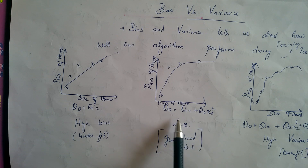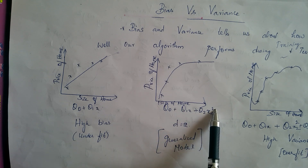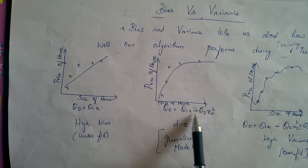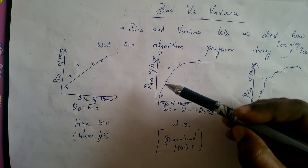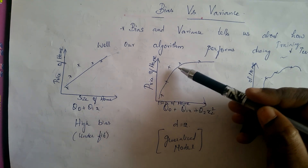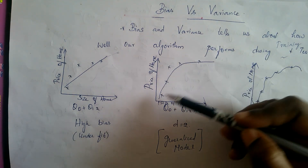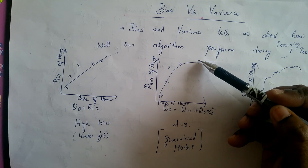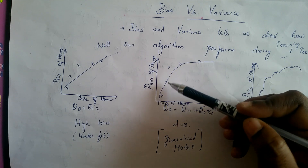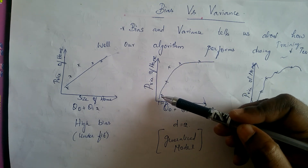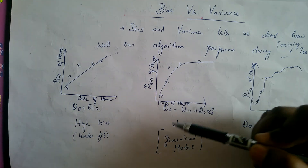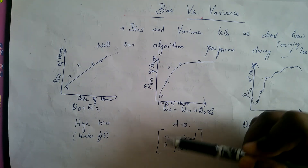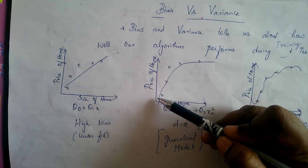Now we have increased one more attribute by raising the degree of the polynomial. This is still linear regression but with a higher polynomial degree. We can see that most of the training data are now fit well, giving us a generalized model.